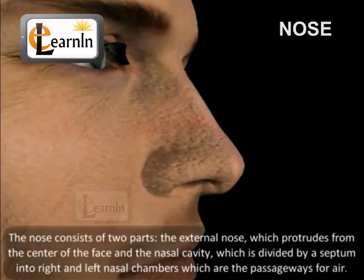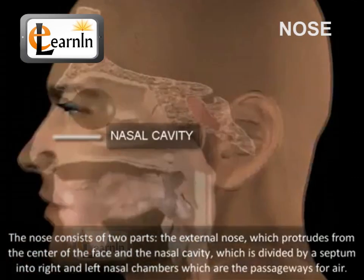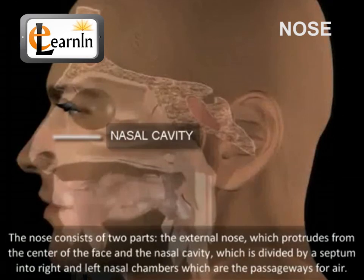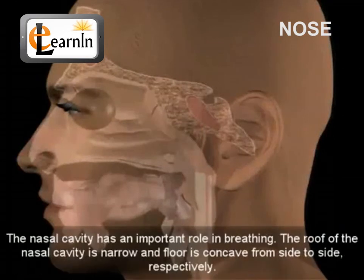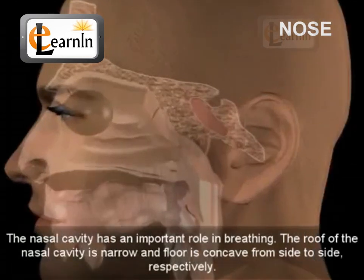The nose consists of two parts: the external nose, which protrudes from the center of the face, and the nasal cavity, which is divided by the septum into right and left nasal chambers that serve as passageways for air. The nasal cavity has an important role in breathing. The roof of the nasal cavity is narrow and the floor is concave from side to side.